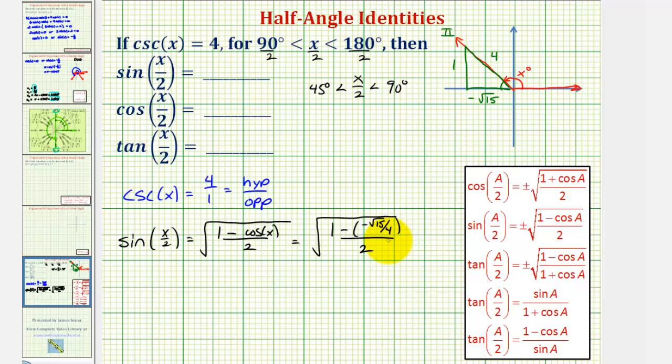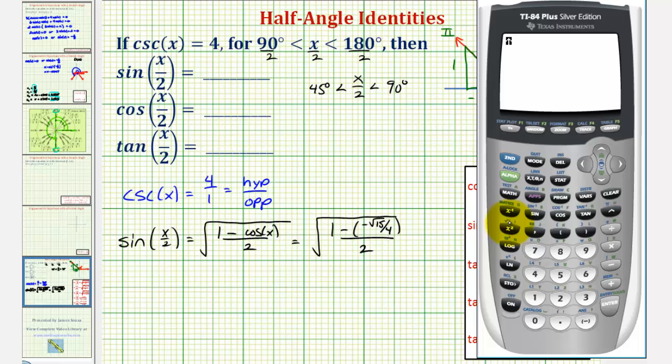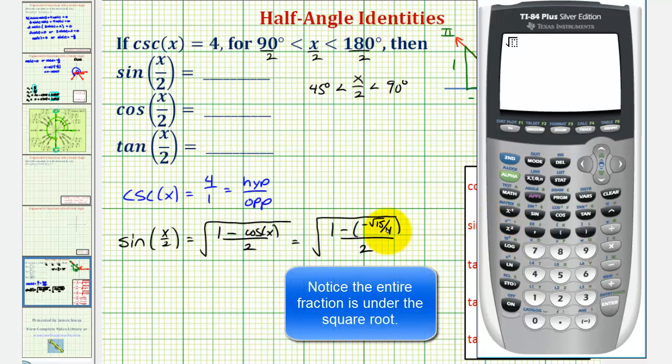And all this is divided by two. And now we can go to the calculator to get an approximation for sine x divided by two. We would have the square root, and then we have a numerator and denominator, so we'll put the numerator in parentheses, so open parenthesis,